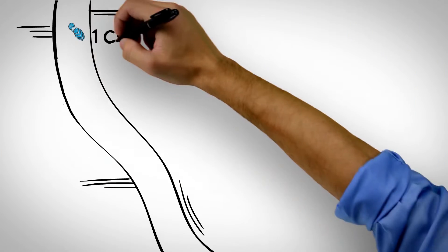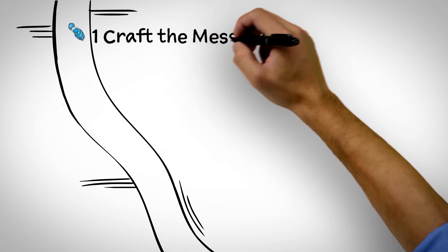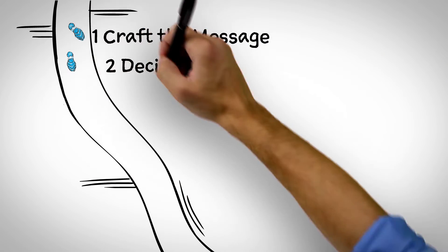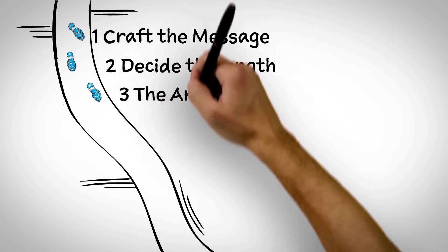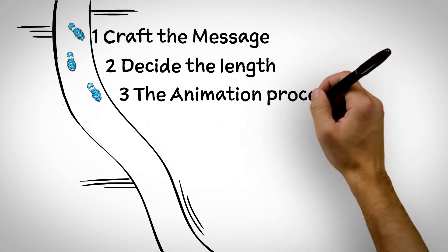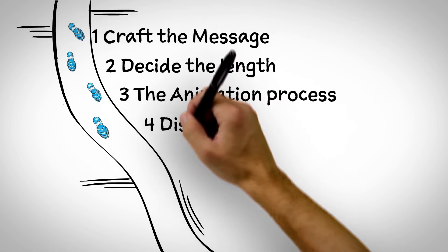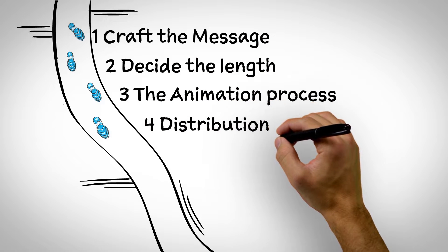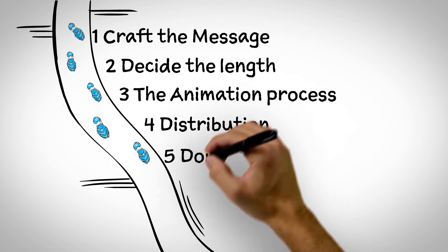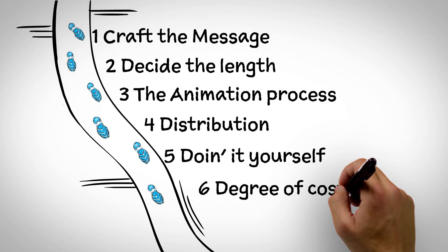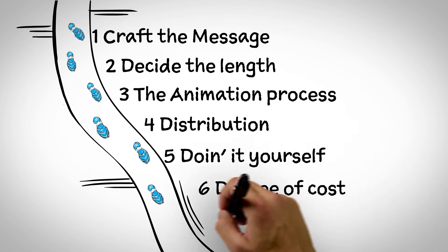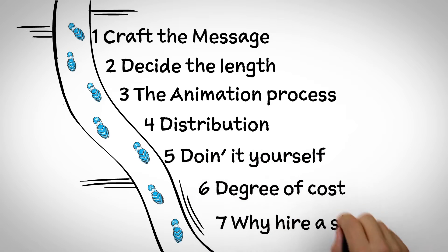How to make a whiteboard video in 7 steps: Step 1, craft the message. Step 2, decide the length. Step 3, the animation process. Step 4, distribution. Step 5, doing it yourself. Step 6, degrees of cost. And Step 7, why hire a studio.